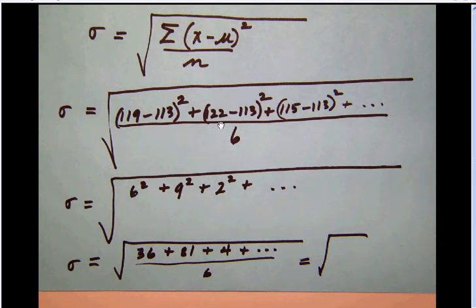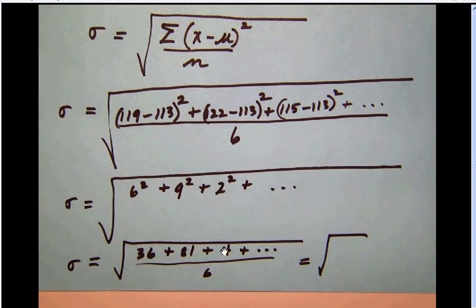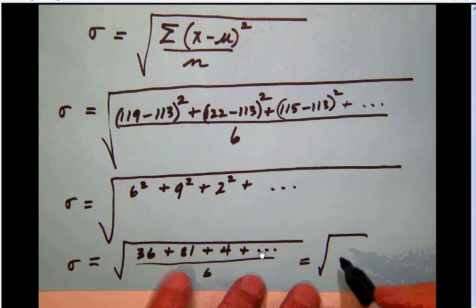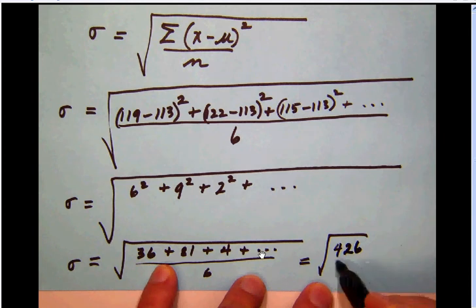115 minus 113 is 2, and 2 squared is 4. Then 103 minus 113 is negative 10, and negative 10 squared is 100. After working through all the remaining values and adding these numbers up, I got 426. You might check and be sure that you've got that.